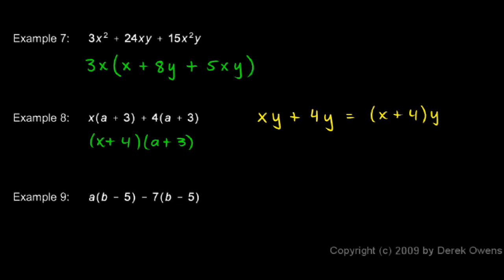So a times that thing minus 7 times that thing can be factored as a minus 7 times that thing. a minus 7 times b minus 5. And that's our answer.